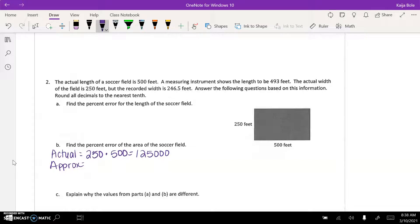The actual width is 250 feet but the recorded width is 246.5, so this would be 493 times 246.5, and that would get to 121,524.5. So then you would use each of these in your percent error formula.